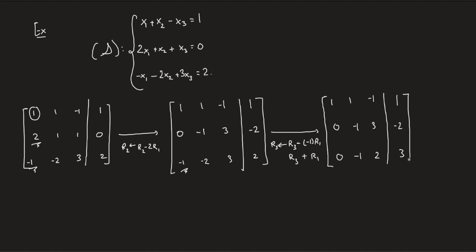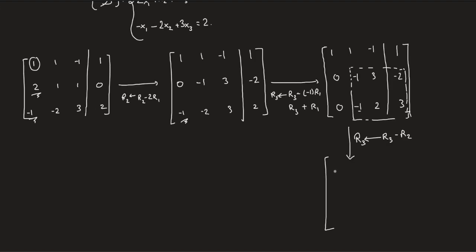Notice that we still have one element to null out, which is minus one. Now since all the elements below one are zero, we take a look at this matrix over here. And we repeat the same procedure. Now let's apply one more row elementary operation, that is instead of R3, we're going to place R3 minus R2.